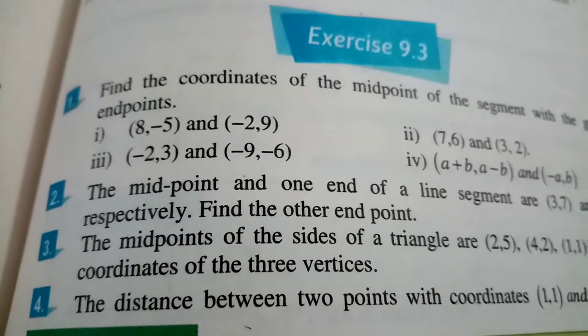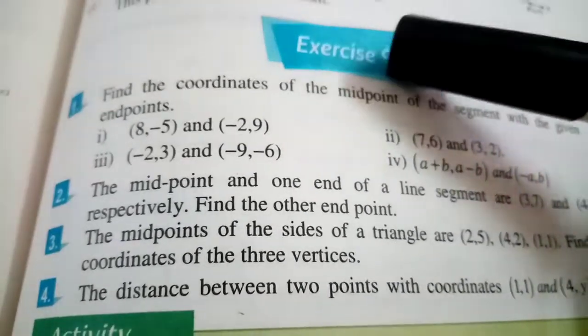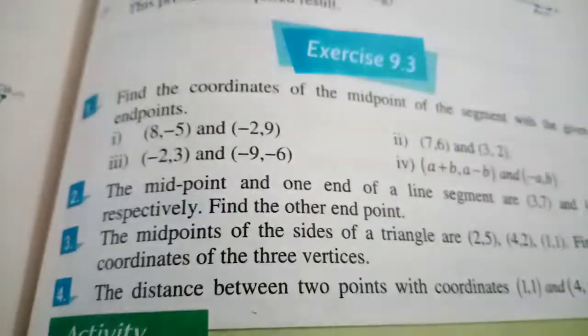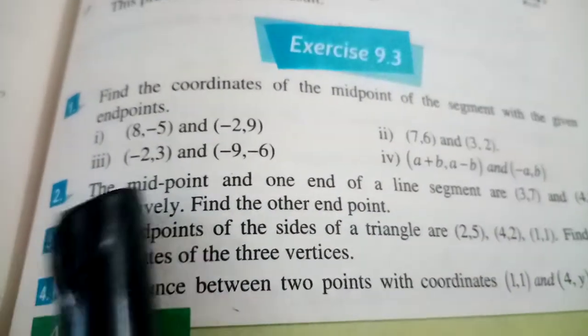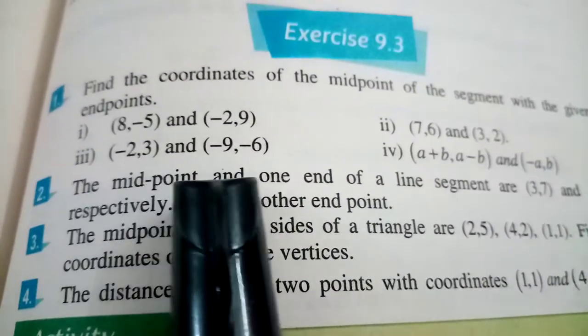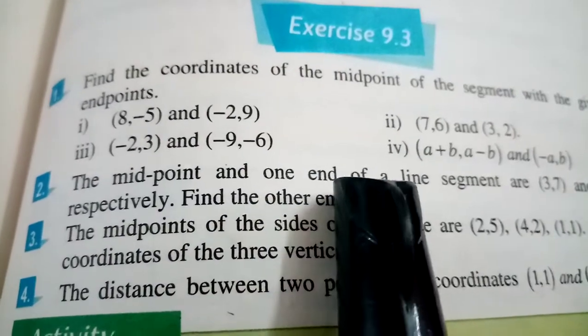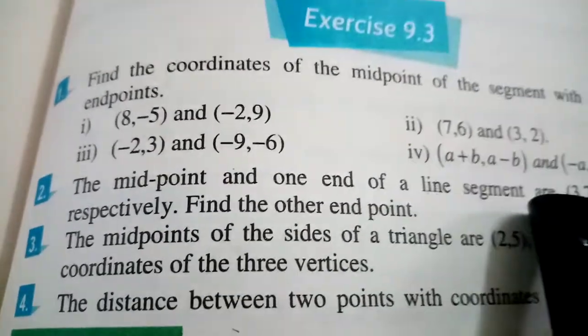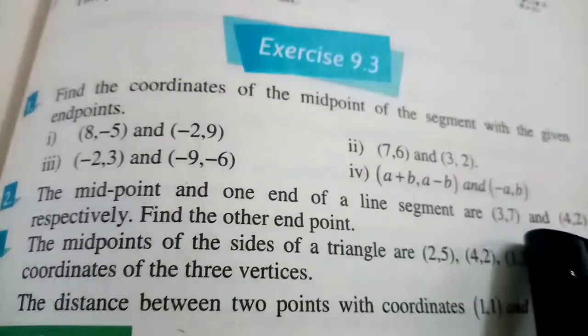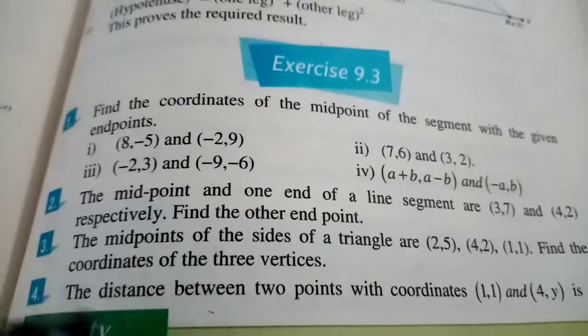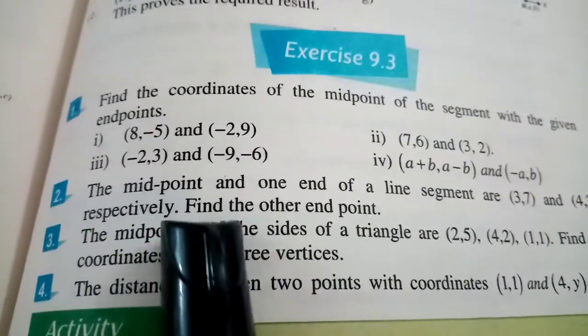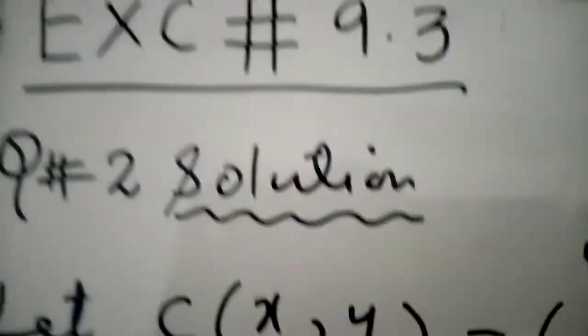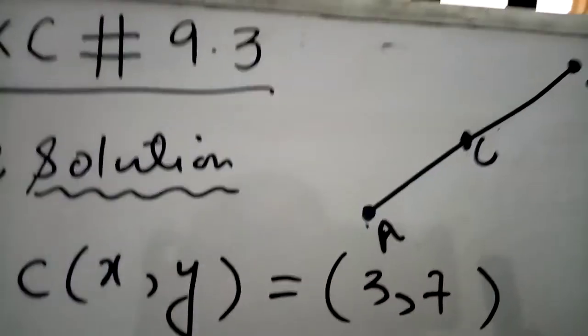Bismillahirrahmanirrahim, dear students. Exercise 9.3, question number 2: The midpoint and one endpoint of a line segment are (3,7) and (4,2) respectively. Find the other endpoint. Now first of all, we will draw a line.